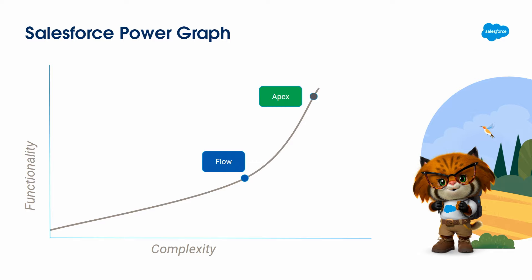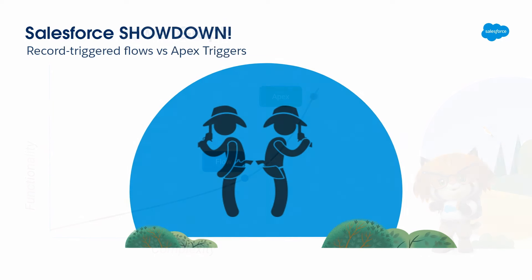With Flow, we don't need a developer to build something in Flow Builder — any administrator or even a super user can do it. But with Apex, we can do anything if we have a developer who can code. Now, are you ready for an exciting showdown? Let's see what happens.